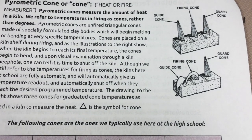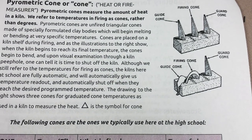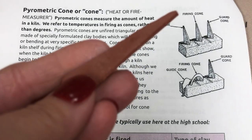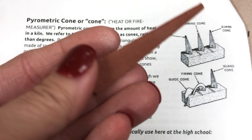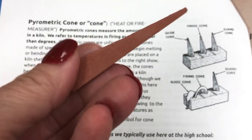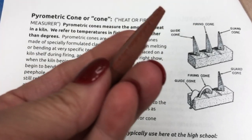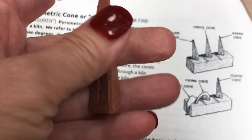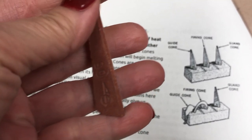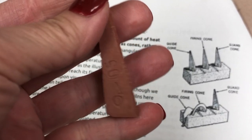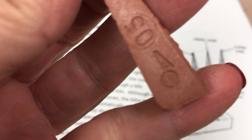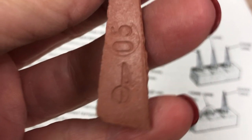Next up is pyrometric cone. The root 'pyro' comes from heat or fire, and 'metric' means to measure — it measures the amount of heat work done in a kiln. A pyrometric cone is a physical little cone made of a specially formulated clay body that is designed to melt or bend at a specific temperature.